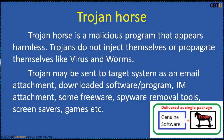Hackers find many ways to distribute Trojans — it can be everywhere: email attachments, malware removal tools, screensavers, games, etc. A simple example to understand a Trojan horse: it's like a bundle with a malicious payload inside. This is the genuine software and this is the Trojan — both are bound together in a single package.